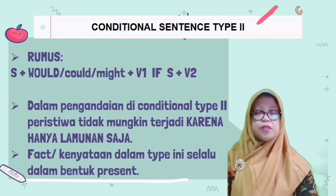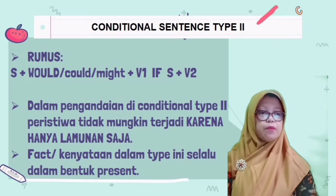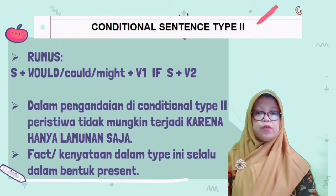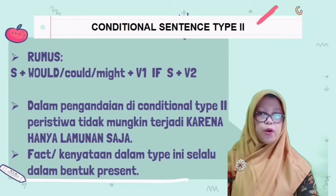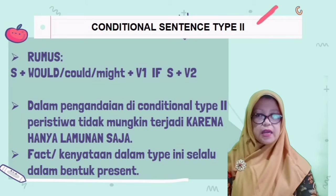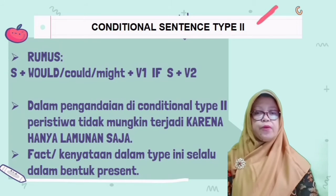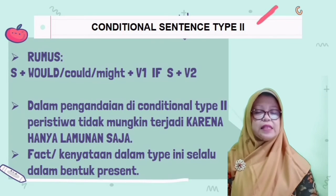The second, we will talk about conditional sentence type 2. Di dalam kalimat pengandaian tipe yang kedua, rumusnya adalah: Subject diikuti modal would, atau could, atau might, diikuti kata kerja pertama, diikuti if, diikuti subject, diikuti kata kerja kedua. Untuk pengandaian tipe kedua ini berfungsi menyatakan pengandaian yang tidak bisa terjadi di waktu sekarang.